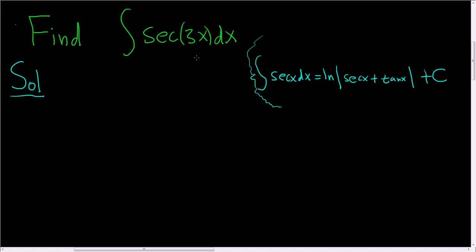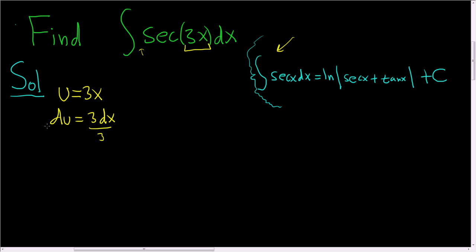In this case, we almost have what we need from the formula, except we have 3x. So the natural thing to do is let u equal 3x. That means du equals 3 dx. We don't have a 3 in the integrand, so we divide by 3.